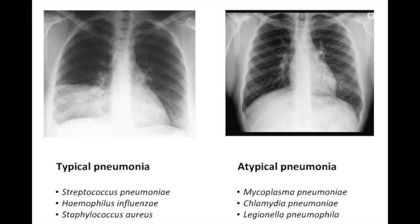For atypical pneumonia, we get a slightly different picture. The person is usually younger and generally healthy — not as sick. For example, a 24-year-old man comes in with a persistent cough and low-grade fever but has still been able to go to work. You get a chest x-ray and see a patchy infiltrate in the left lung field around the cardiac silhouette — not very impressive compared to the typical lobar infiltrate, but very typical for atypical pneumonia.